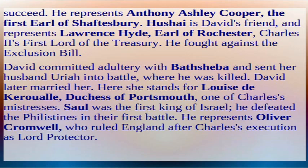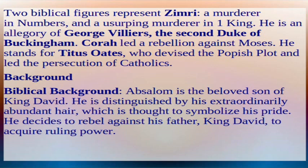Saul was the first king of Israel who defeated the Philistines; he represents Oliver Cromwell, who ruled England after Charles's execution as Lord Protector. Zimri, a murderer in Numbers and a usurping murderer in First Kings, is an allegory of George Villiers, the second Duke of Buckingham. Corah led a rebellion against Moses and stands for Titus Oates, who devised the Popish Plot and led the persecution of Catholics.